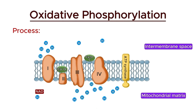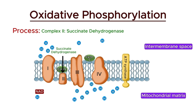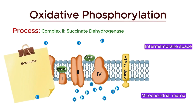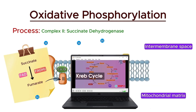Now let's move on to the second stage of the electron transport chain, focusing on complex 2, also known as succinate dehydrogenase. Succinate dehydrogenase is responsible for transferring electrons from succinate, via FADH2, to coenzyme Q, or ubiquinone. First, succinate — a substrate from the citric acid cycle — is oxidized to fumarate within complex 2, reducing the FAD prosthetic group to FADH2.